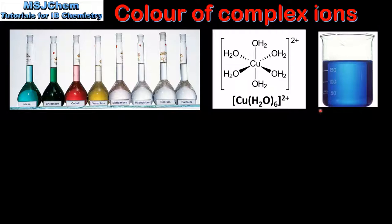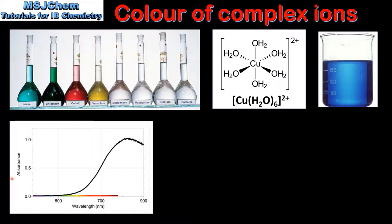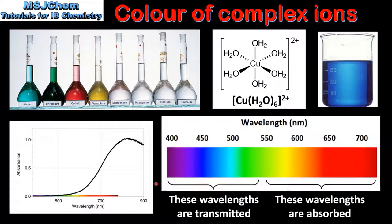This complex ion has a distinctive blue colour which we can see here on the right. To understand why the solution appears blue we need to look at the absorption spectrum of the solution. When white light passes through the solution, certain wavelengths are absorbed and certain wavelengths are transmitted. We see the wavelengths of light that are transmitted, therefore the solution appears blue.